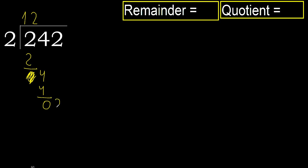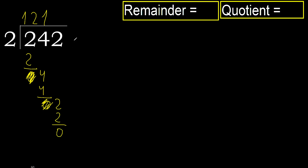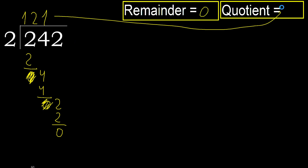Next, 2. 2 multiplied by 1 is 2, it is not greater. Subtract. Next, that is not a number, therefore finish it. 242 divided by 2 is here: 121.